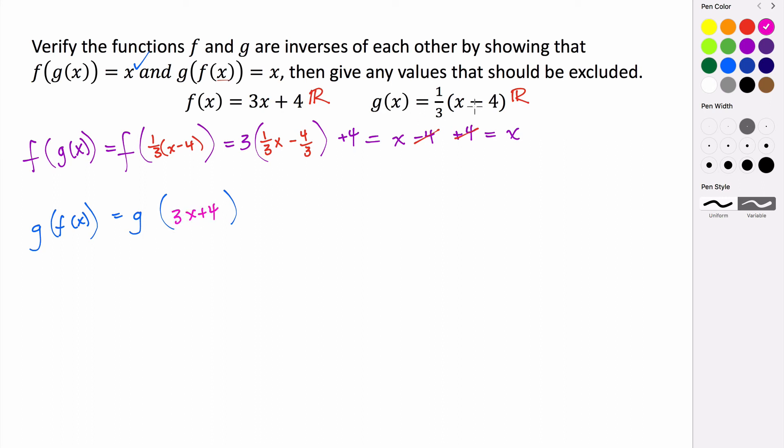So anywhere that we see x, we're going to plug in 3x plus 4. So that's going to be equal to one third times some quantity, which is 3x plus 4. And then that quantity is going to be subtracting 4 from it. So 3x plus 4 minus 4.